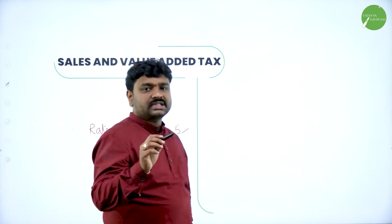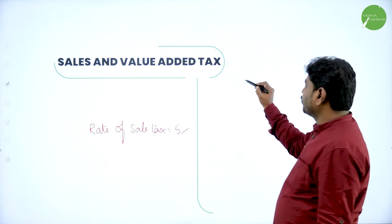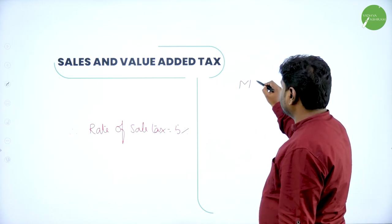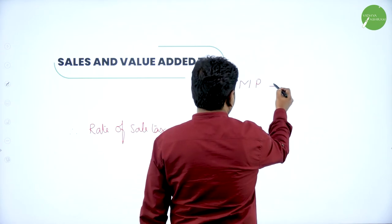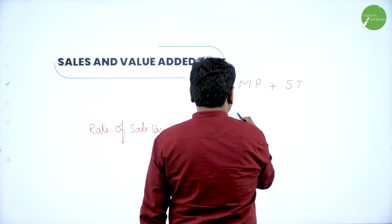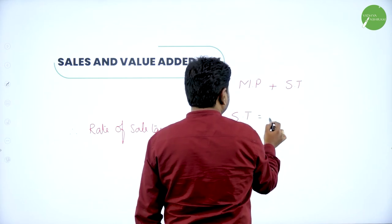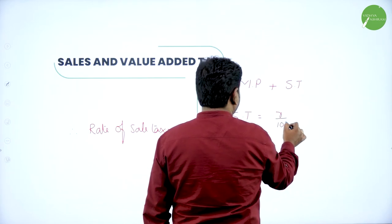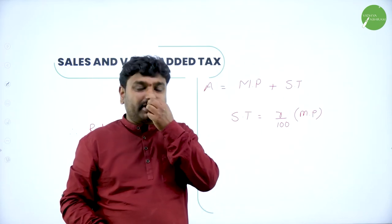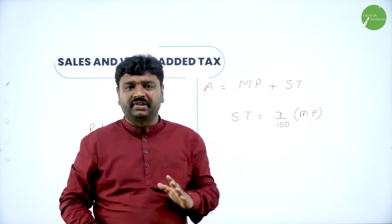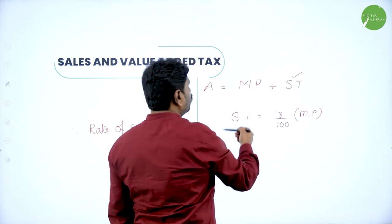Let me summarize sale tax. For every purchase, you have to pay the market price of the item. Along with that, you pay sale tax. Total amount paid is market price plus sale tax. Sale tax is calculated as the rate of sale tax (R by 100) multiplied by market price. If I say 8% sale tax, that means 8 by 100 of market price. Always, market price plus sale tax equals total amount paid.